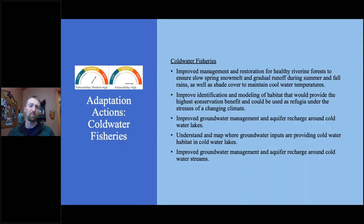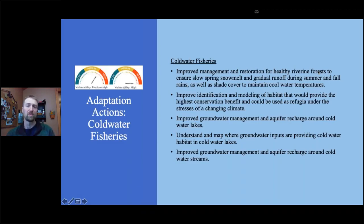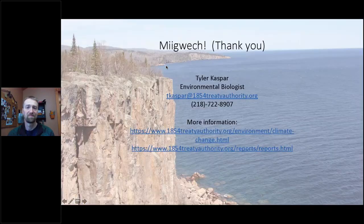Adaptation strategies for cold water fisheries focus on protecting and enhancing riparian areas and buffers along streams and around lakes, and identifying key areas with groundwater sources and protecting those — especially along the north shore bordering Lake Superior. There's not a lot of groundwater input along much of that shore, and runoff is dominated by landscape runoff. Where you do have cold groundwater sources, that is providing thermal refugia for cold water species, so it's very important to protect that.